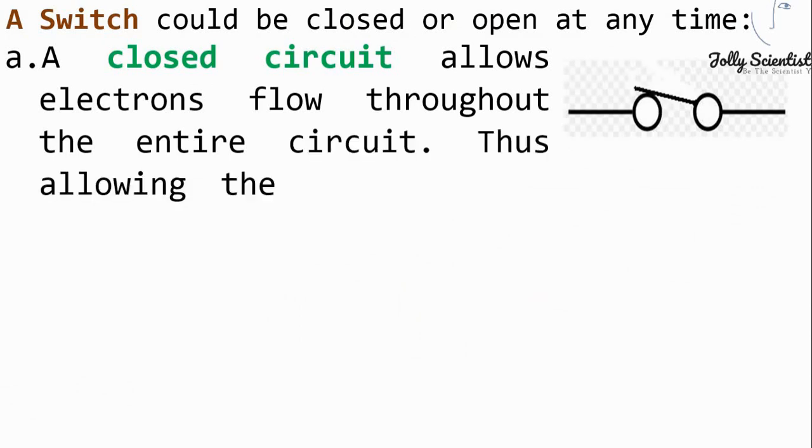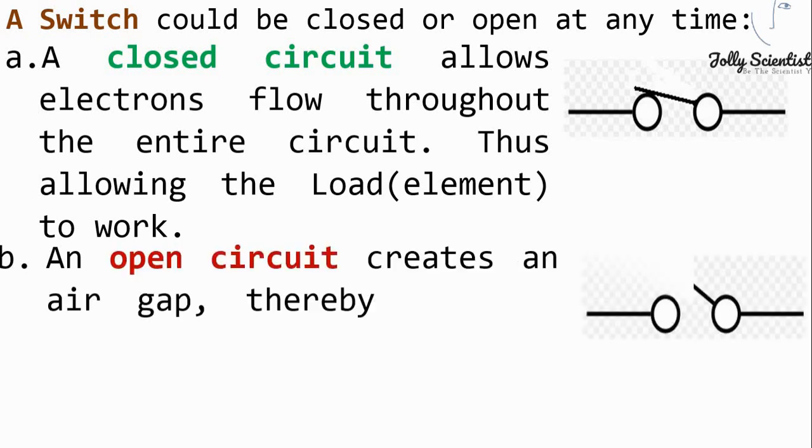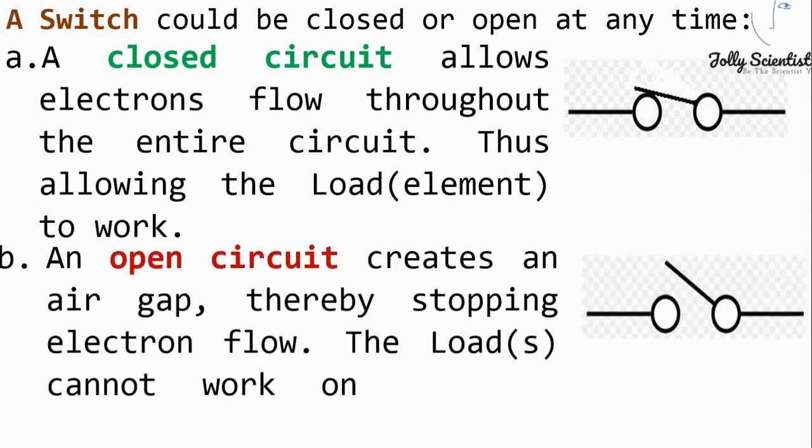A closed circuit allows electron flow throughout the entire circuit, thus allowing the loads to work. An open circuit creates an air gap, thereby stopping the electron flow. The load cannot work on an open circuit.